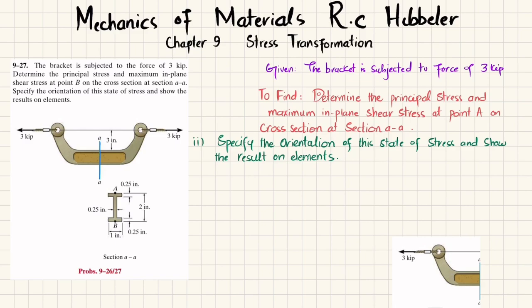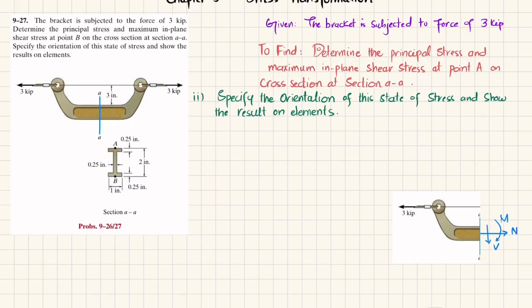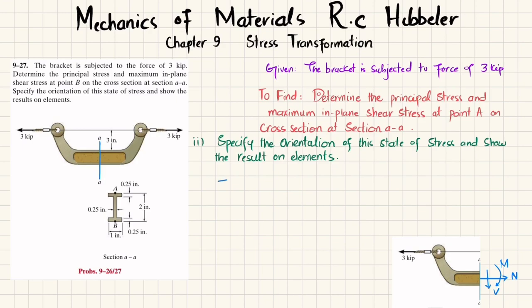First step: if we cut it at section A-A and draw the free body diagram, at this section we will have a reaction normal force N, a shear force V, and a moment M. We will find V, M, and N using equations of equilibrium.